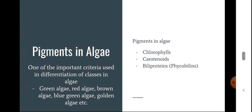In this session, pigments in algae will be discussed. This is a small session about pigments in algae. Pigments are one of the important criteria used in differentiation of the classes — into classes like green algae, red algae, brown algae, blue-green algae, golden algae, etc. The pigments present in algae are chlorophylls, carotenoids, and biliproteins.